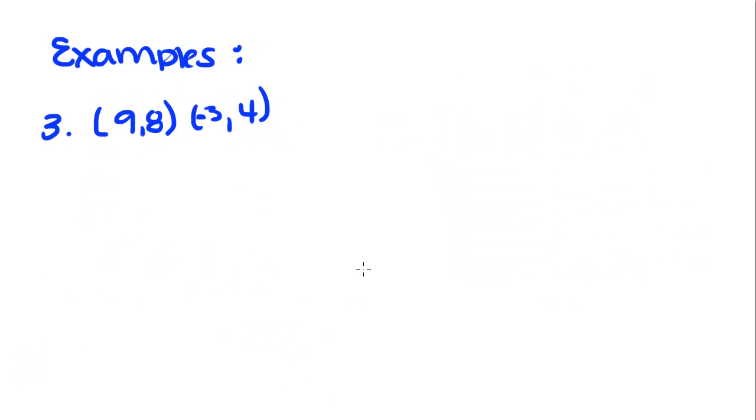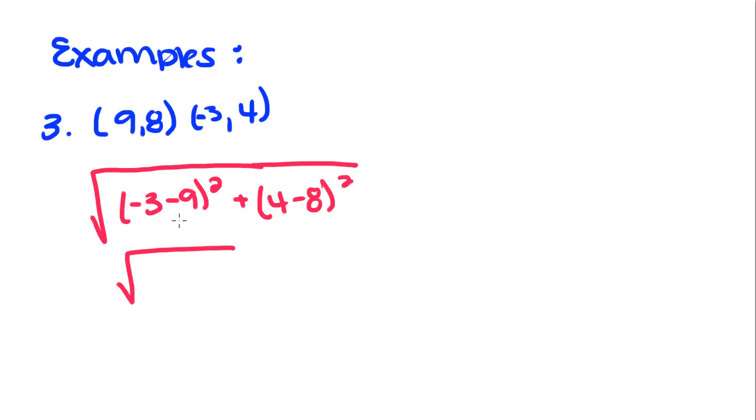We're going to do one more example here. The square root of (negative 3 minus 9) squared plus (4 minus 8) squared. Negative 3 minus 9 gives us negative 12 squared, which is 144. Plus 4 minus 8 is negative 4. Negative 4 squared is 16. If you add those together, you get the square root of 160.